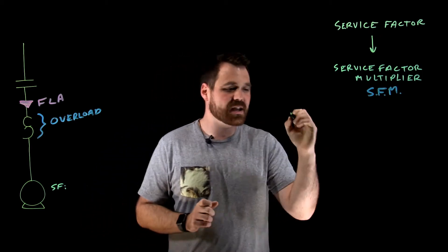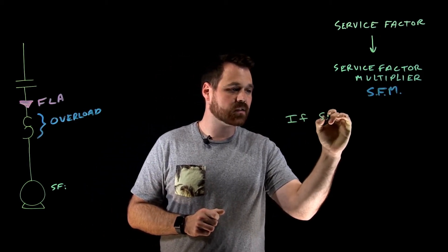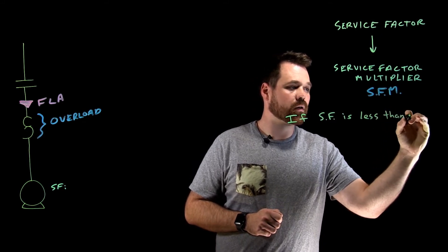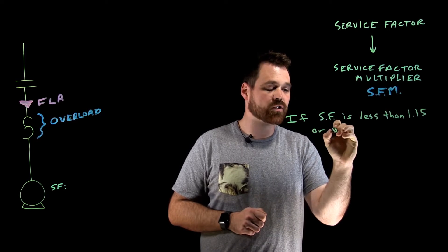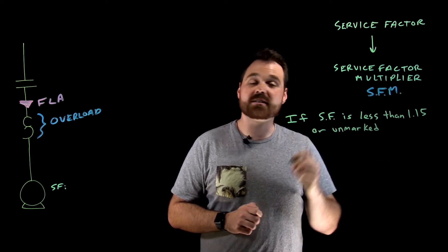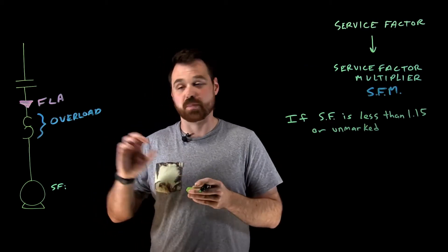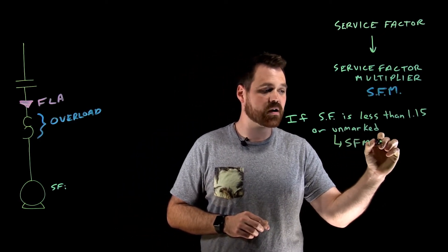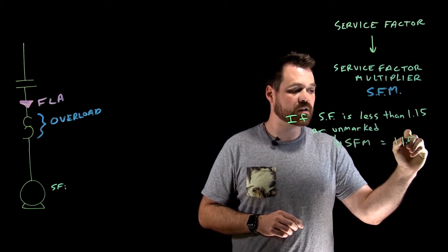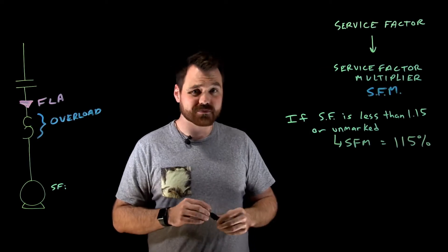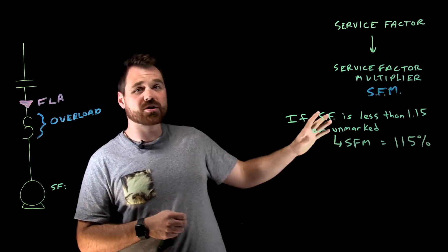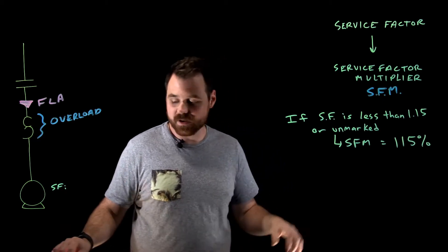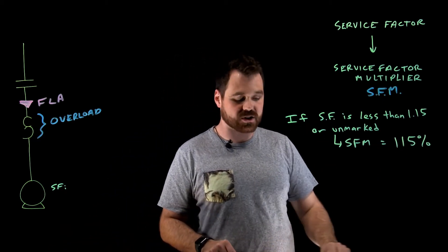The code book tells us if your service factor is less than 1.15 or if your service factor is unmarked, meaning they didn't build the motor good enough to bother putting a service factor on it, so they just left it unmarked, then your service factor multiplier is 115% or 1.15. What that would mean is any motor that has an unmarked service factor, you would assume the service factor is one or if it's less than 1.15.